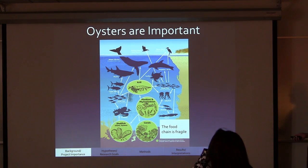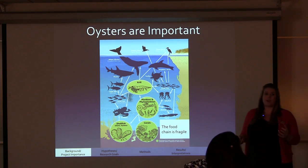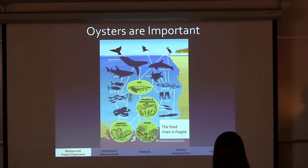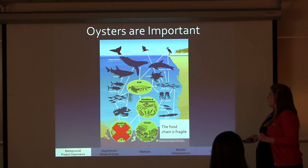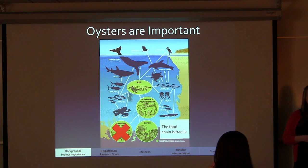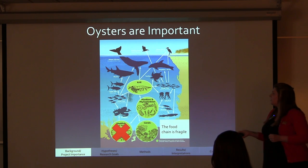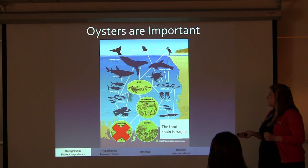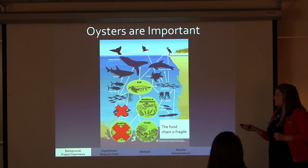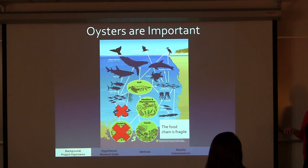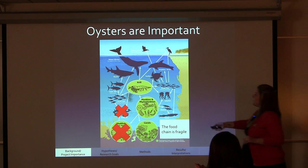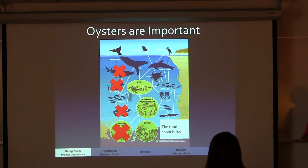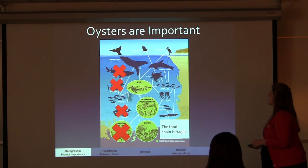Another reason why oysters are important is because their food chain is very fragile. If you remove an element like oysters — if they go extinct or are no longer in our coastal environment — that has devastating effects on things that eat them. For example, the octopus feeds off of oysters, so if we lose our oysters, we can lose the octopus as well. And then things that eat the octopus, such as large fish or sharks, can leave or go extinct too.